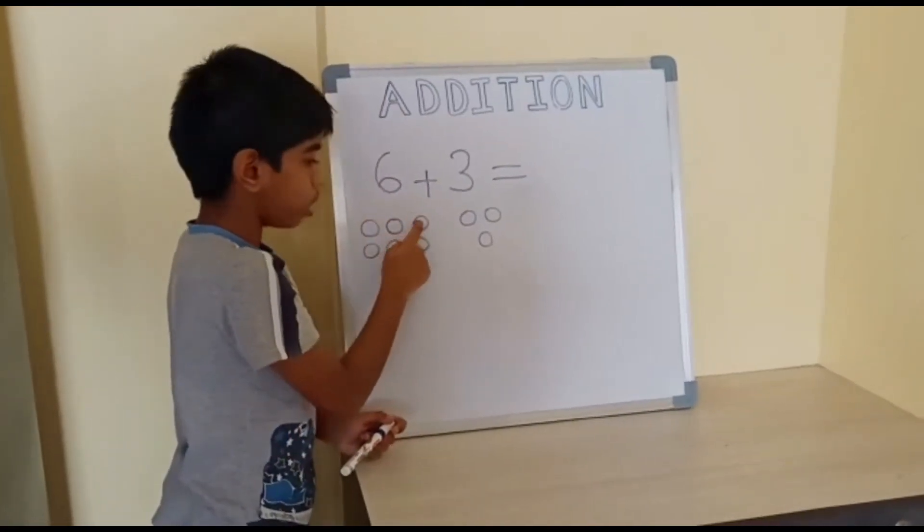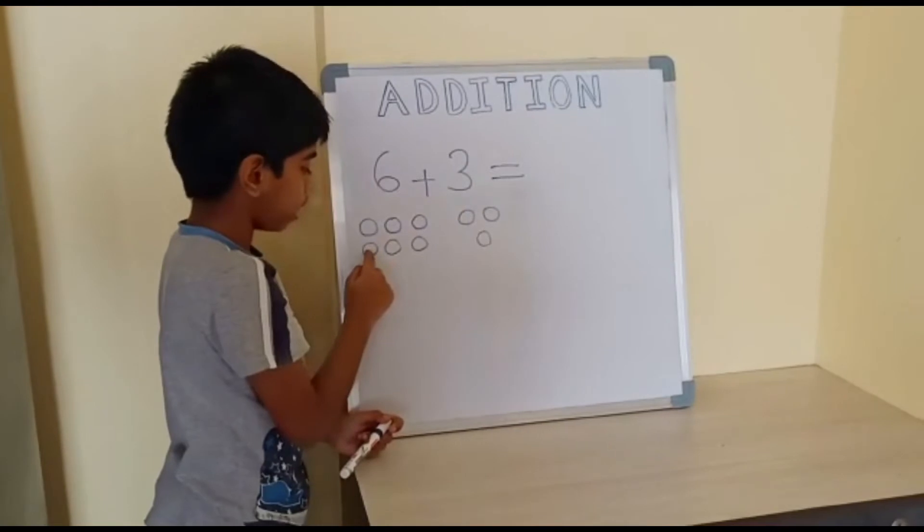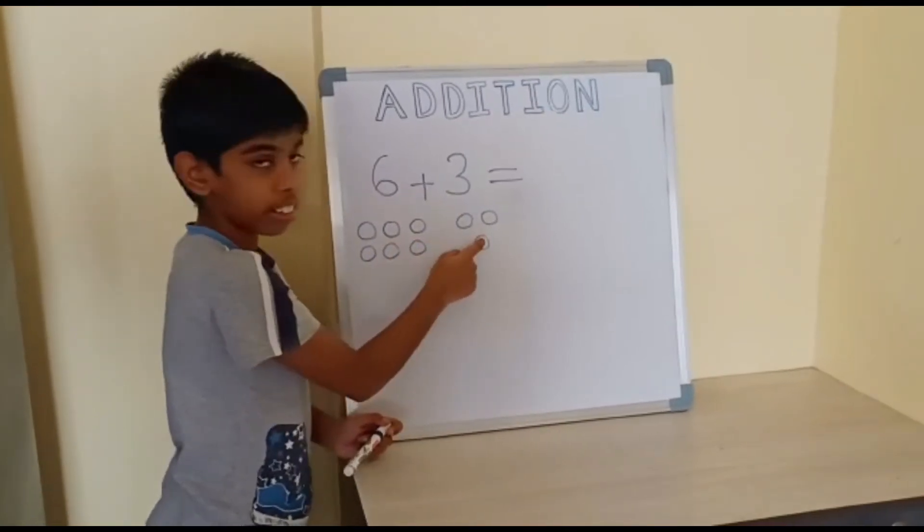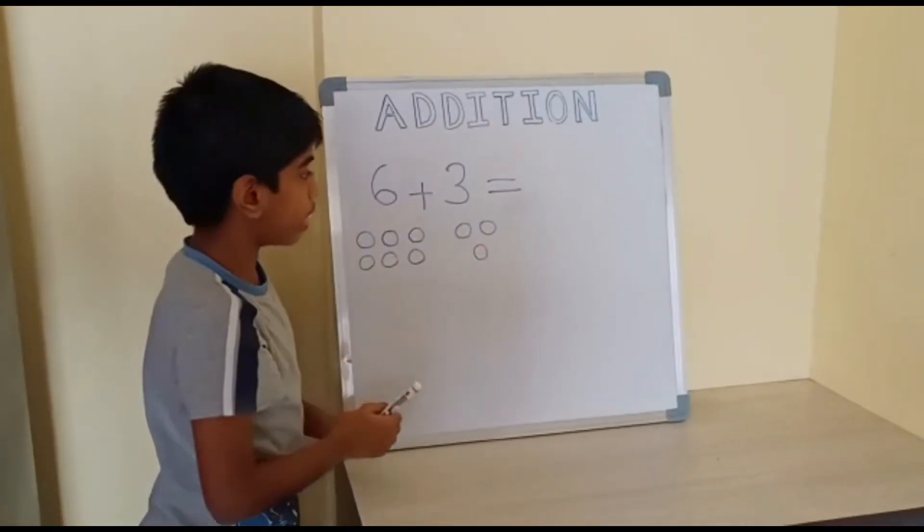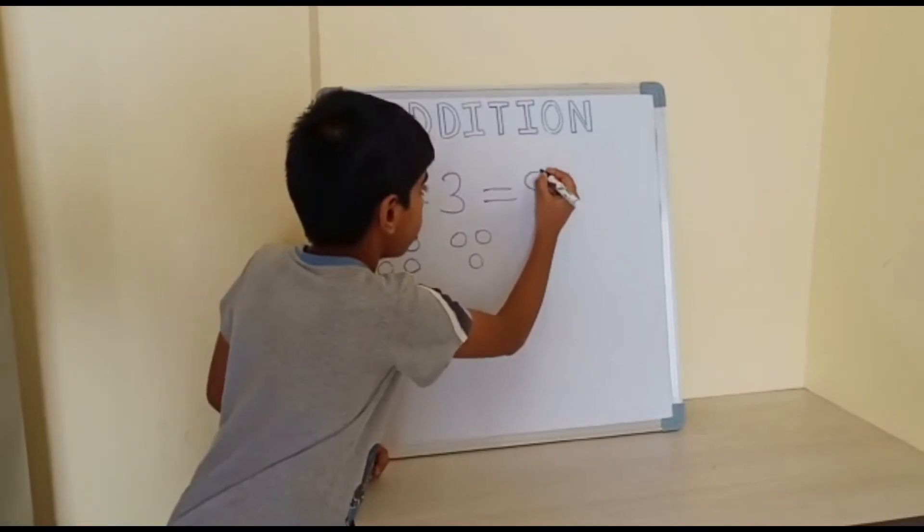1, 2, 3, 4, 5, 6, 7, 8, 9. We have 9 circles. So we should write 9.